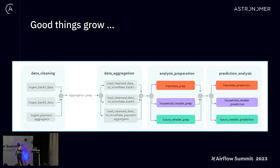The good thing, however, is that good things grow. For anything which has validity, people want to add more data — and that's actually a good problem to have. When you start adding more data, you pull in more from additional sources, additional aggregators, and additional payment systems.